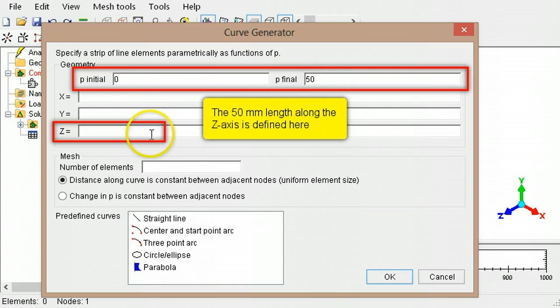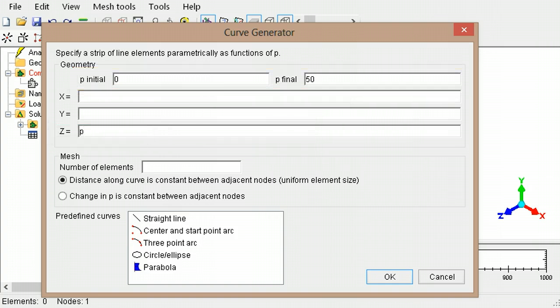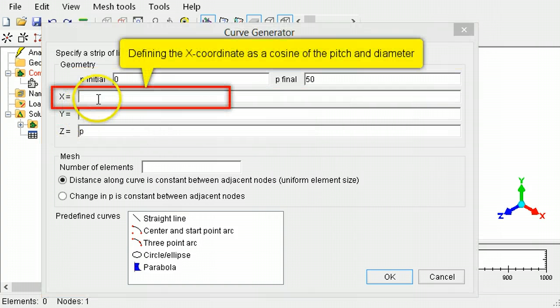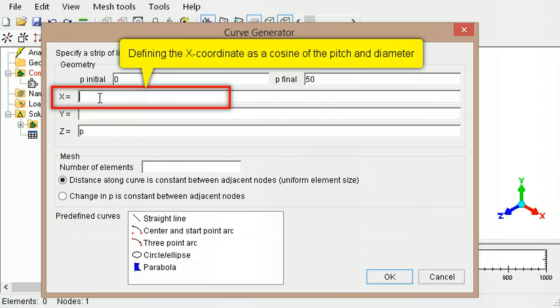Then, p is specified for the z-coordinate. The x-coordinate is specified as a cosine in terms of the pitch and diameter.